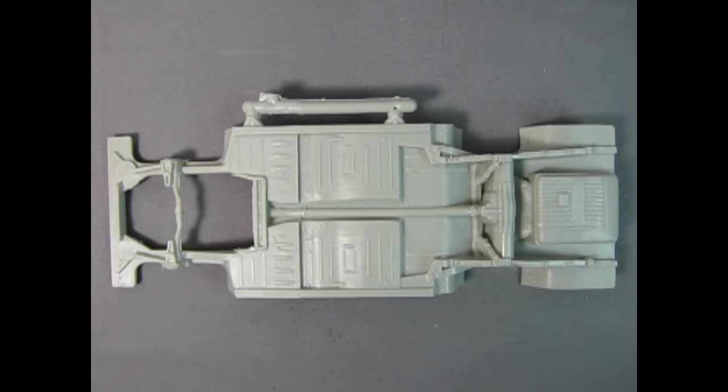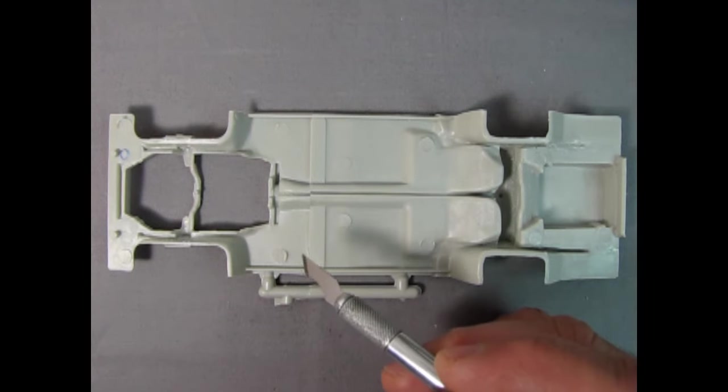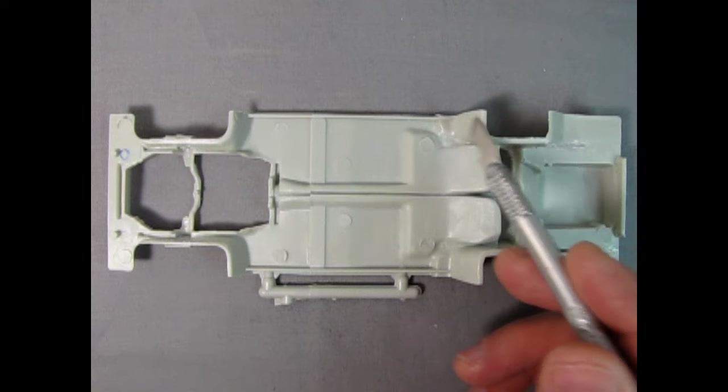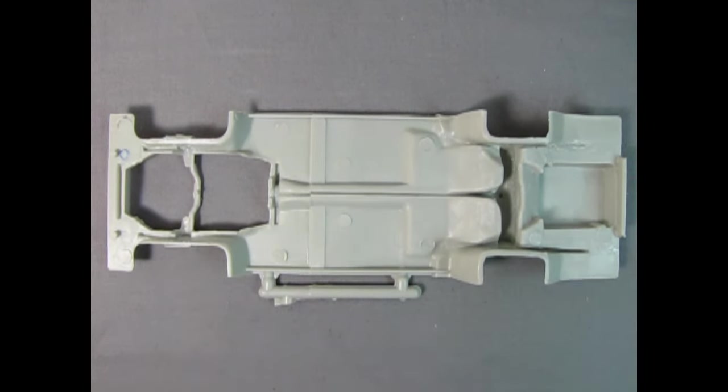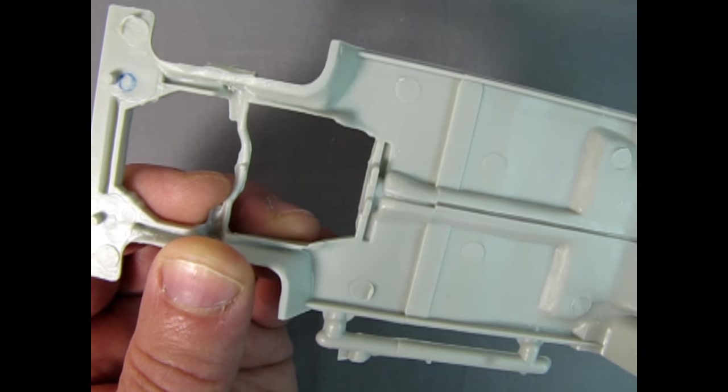That is because the kit gives you an option of using the factory stock exhaust system or the NASCAR exhaust dumps and rear brake cooling ducts. Turning the chassis over to the top side, you can see a series of mold marks which will have to be removed with your number 16 hobby knife to allow everything to sit down flat. Another thing I noticed is that this chassis has been spliced together by AMT.